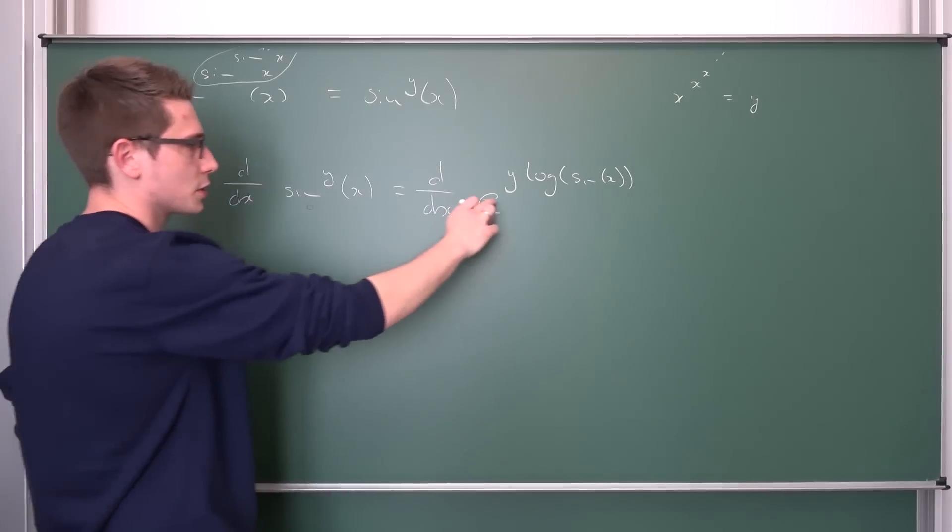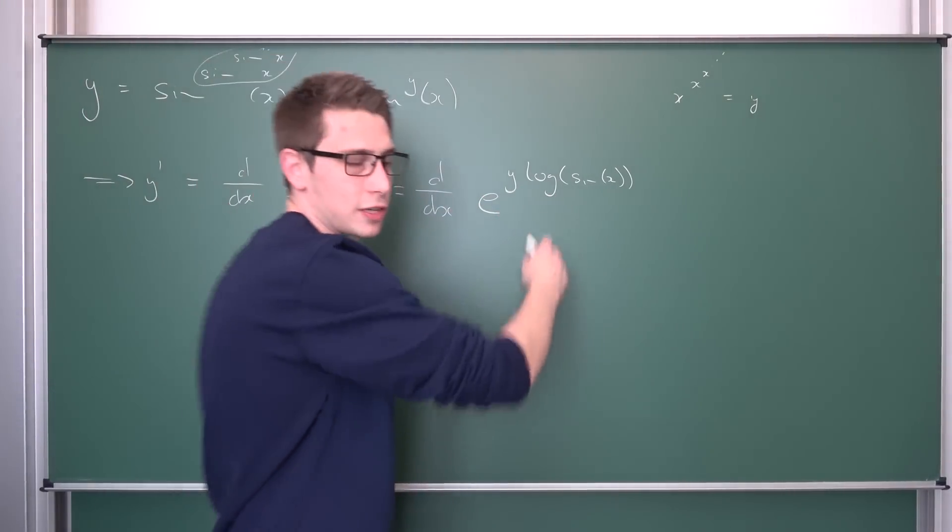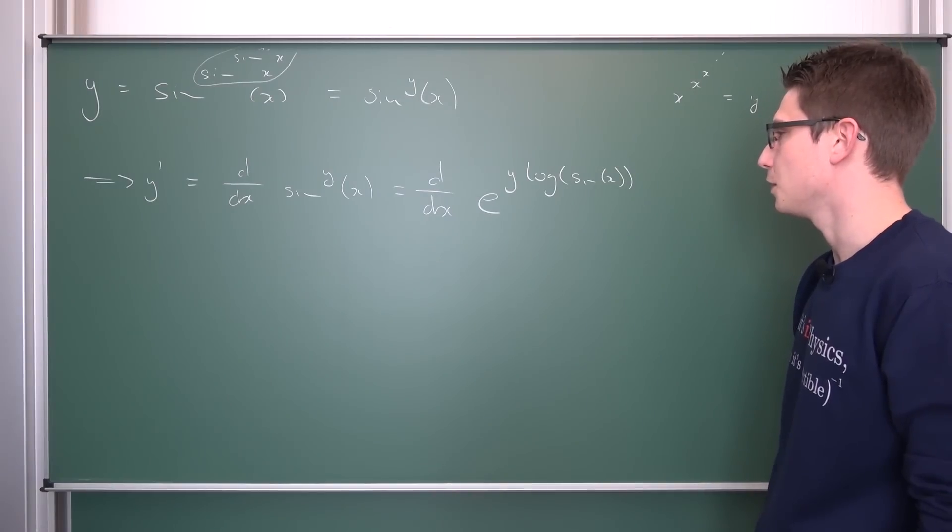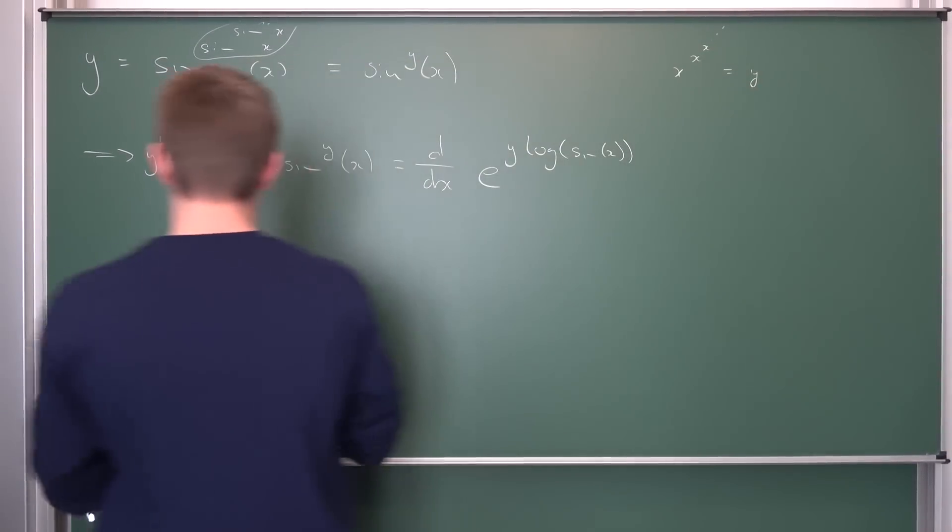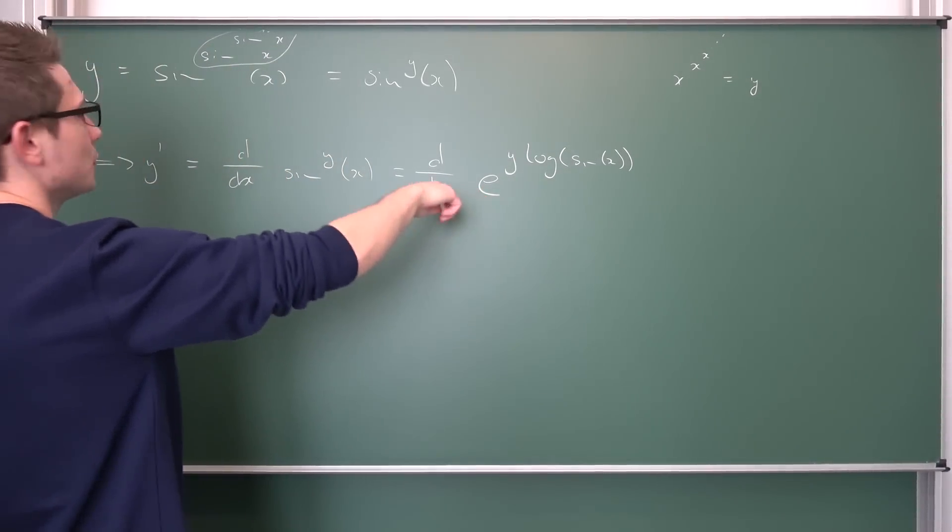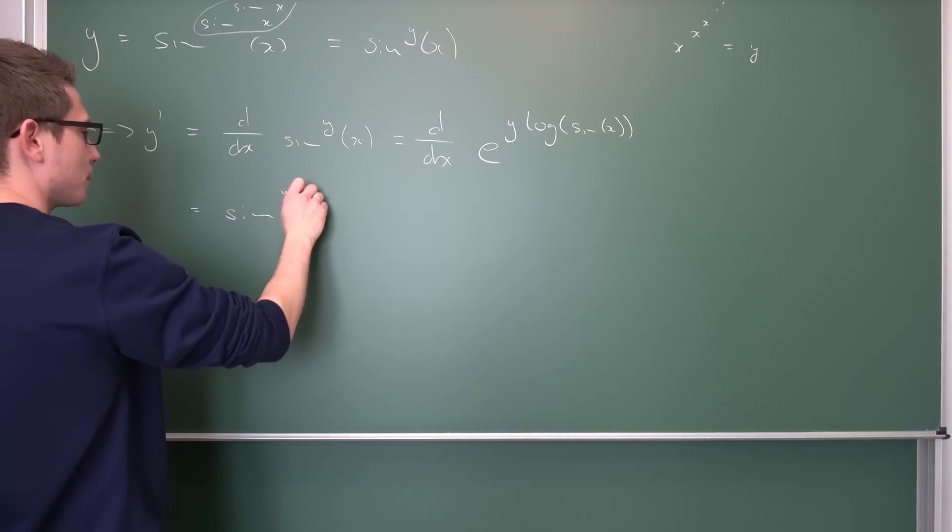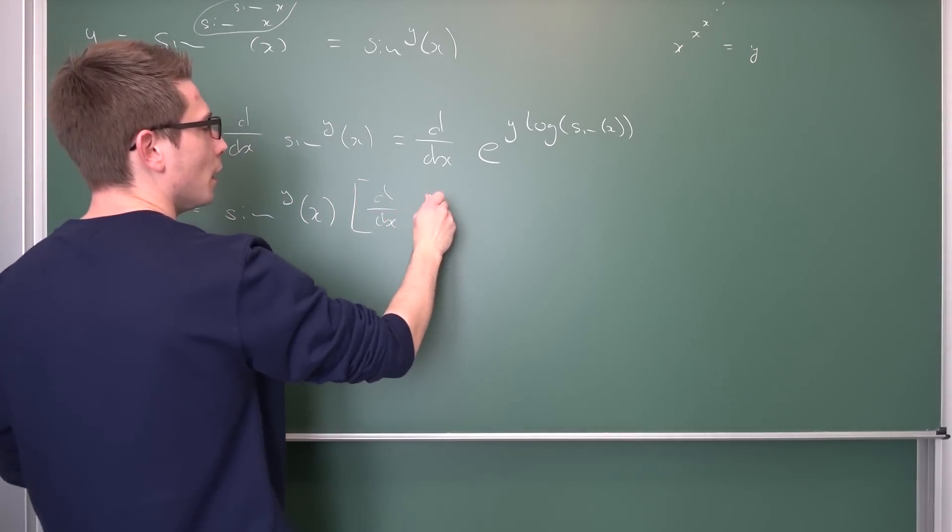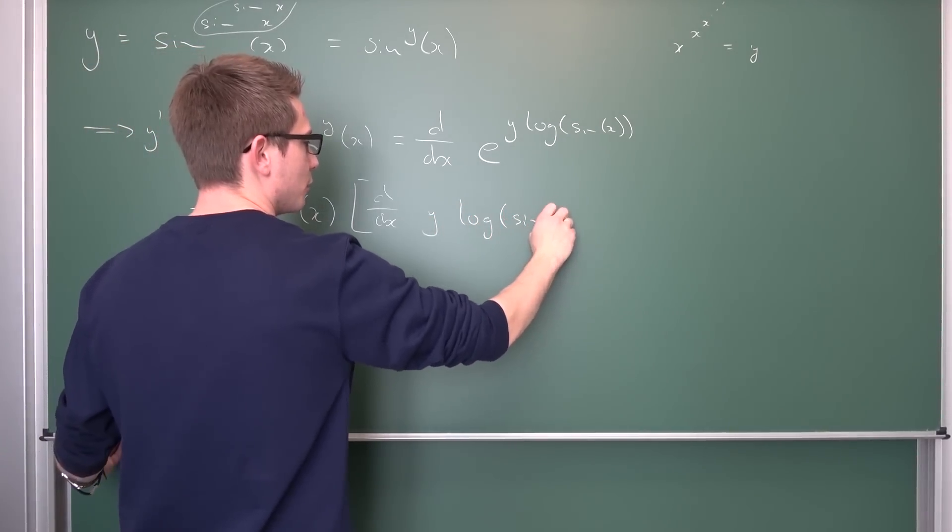Yeah, this is right. So this is y times the logarithm of the sine of x, that's an interesting function, log of sine of x if you ask me. Now we need to see, yeah, just differentiate it I suppose. So e to this stuff is going to be preserved, so e to this stuff is just sine to the y power of x, times d/dx of y times log of sine of x.